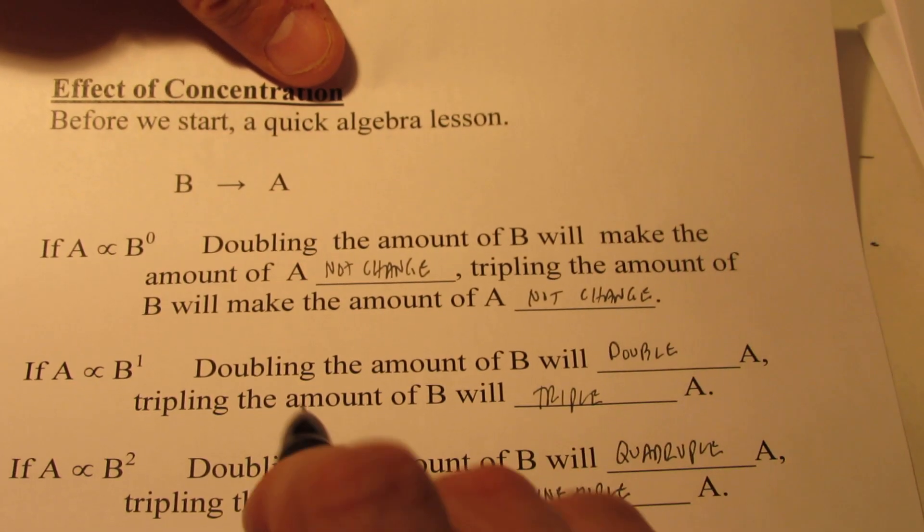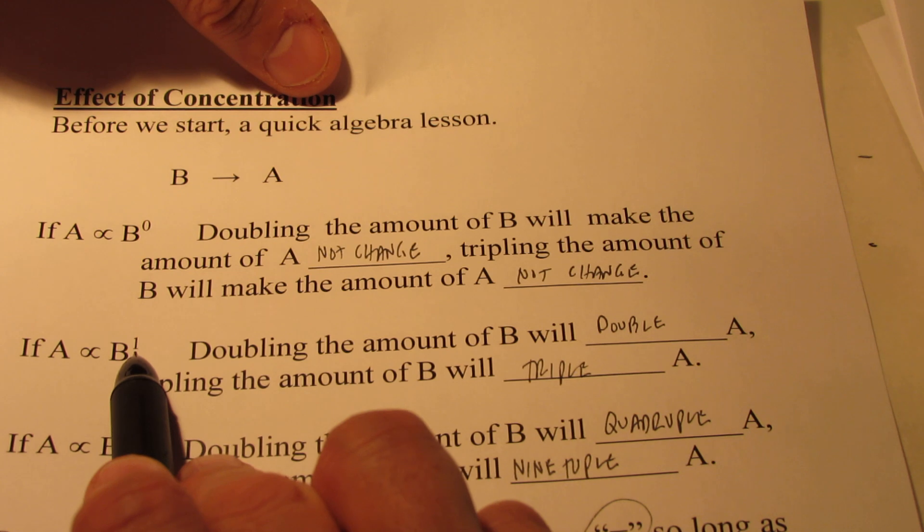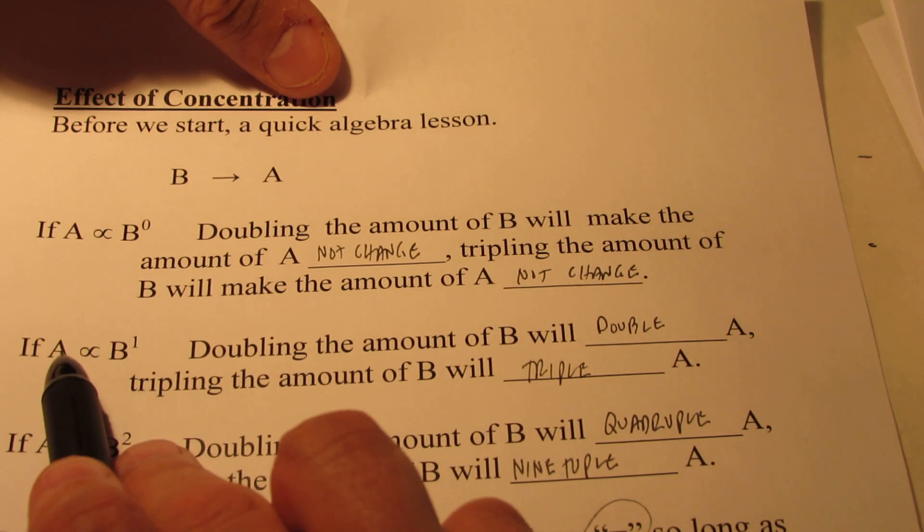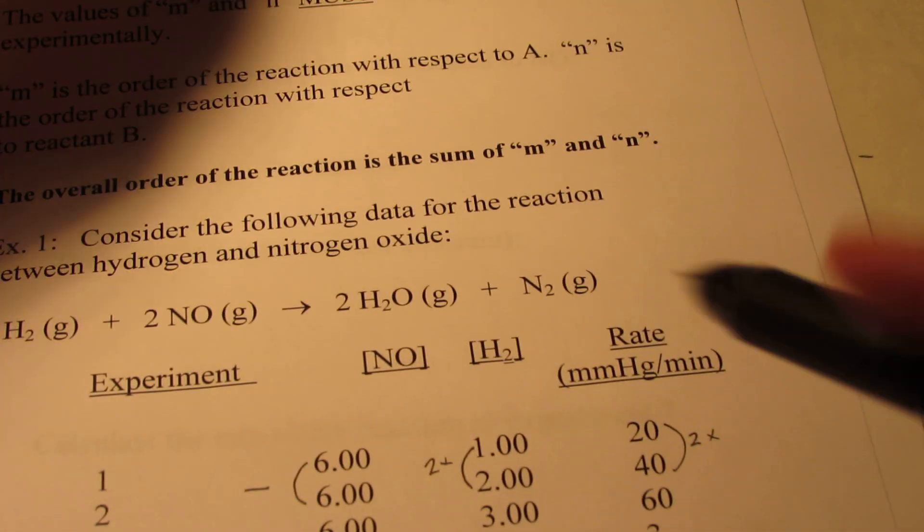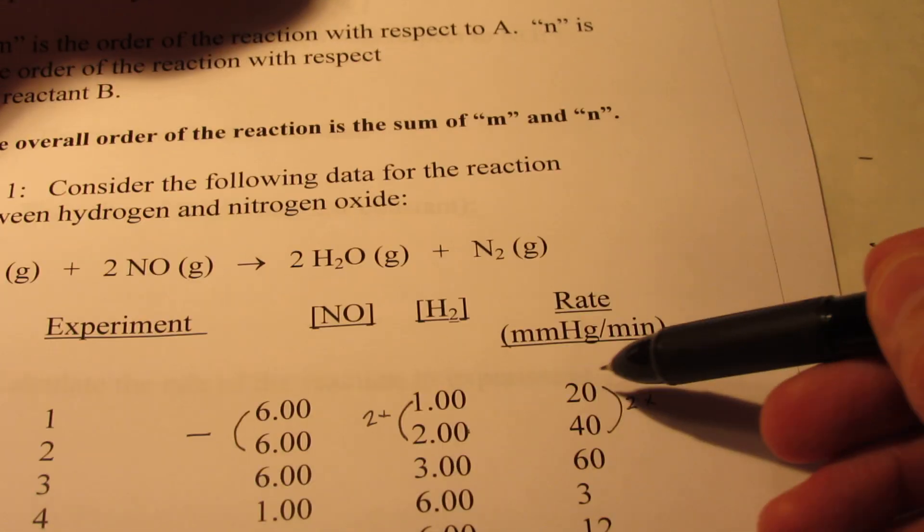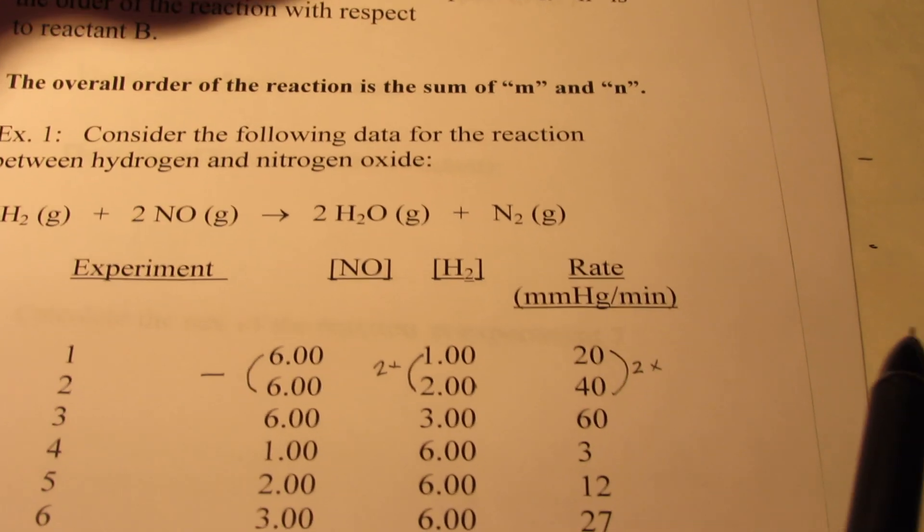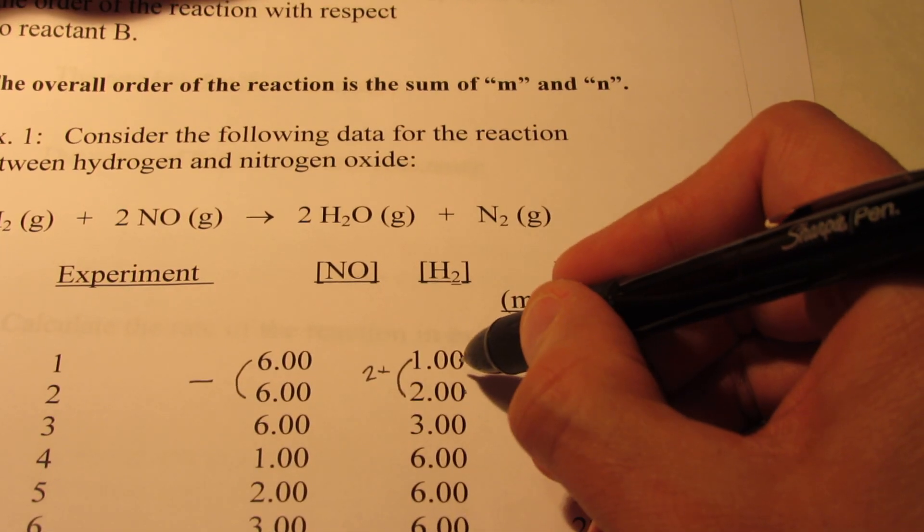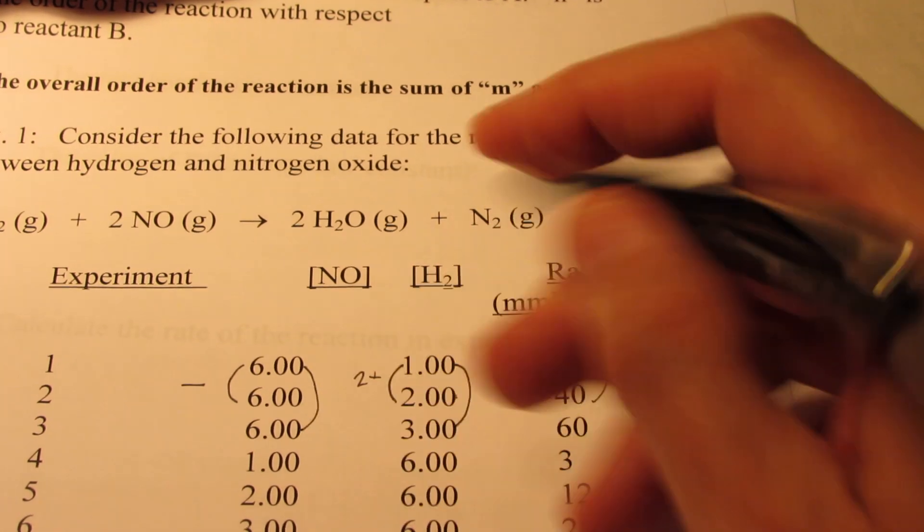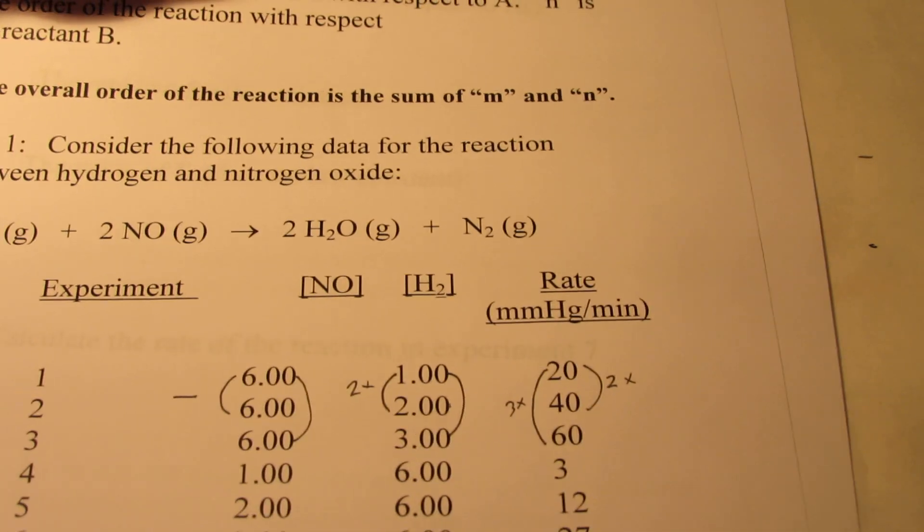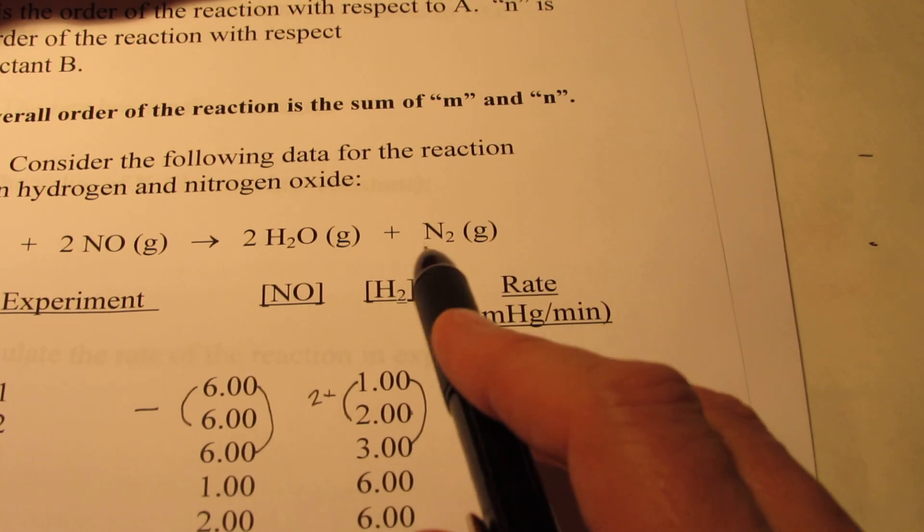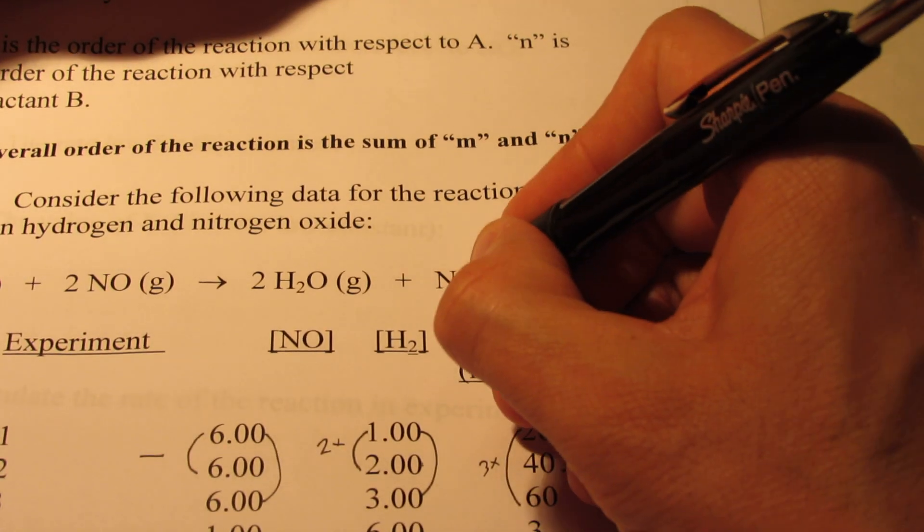Think back to our math lesson. When B was to the first power, whatever I did to it, the same thing happened to A. Let's take a look at our experimental data now. Whatever I did to H2, the same thing happened to the rate. Let's try another one. What if I tripled H2? 1 to 3, while the NO was constant. Well, the rate tripled. Once again, proving that the order of the reaction with respect to H2 is first order.